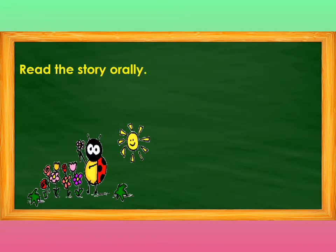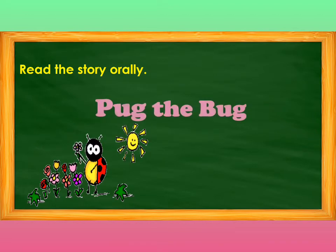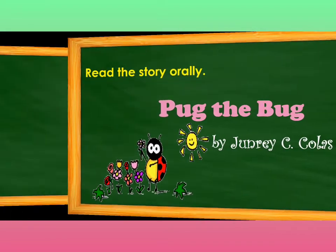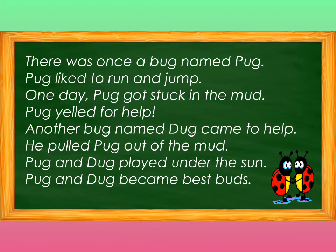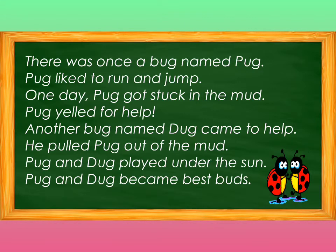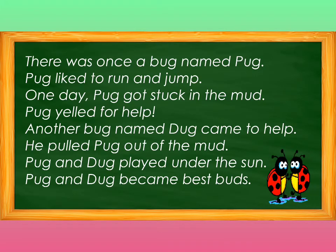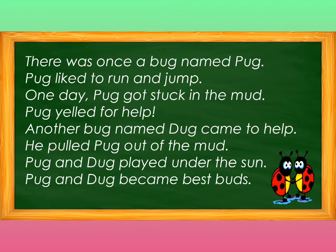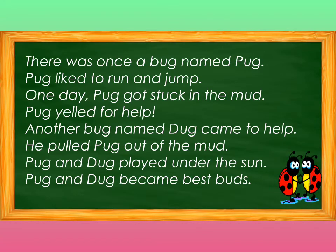Amazing! Let us read the story orally. 'Pog the Bog' by Junrei P. Kulat. There was once a bog named Pog. Pog liked to run and jump. One day, Pog got stuck in the mud. Pog yelled for help. Another bog named Dog came to help. He pulled Pog out of the mud. Pog and Dog played under the sun. Pog and Dog became best bogs.